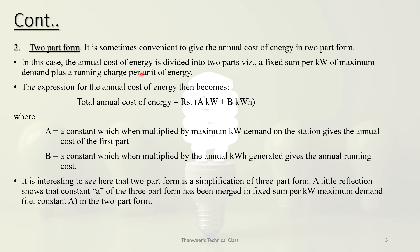It is sometimes convenient to express the annual cost of energy in two-part form. In this case, the annual cost of energy is divided into two parts: a fixed sum per kW of maximum demand, plus a running charge per unit. The expression is: Total cost = A × kW + B × kWh, where 'A' is the constant which when multiplied by maximum kW demand gives the annual cost of the first part, and 'B' is the constant which when multiplied by annual kWh generated gives the annual running cost. The two-part form is a simplification of the three-part form.